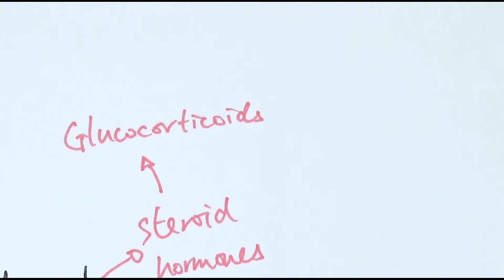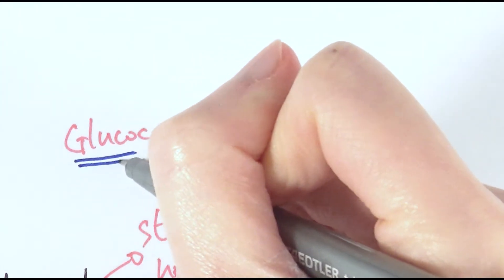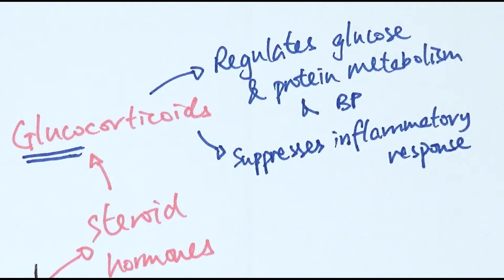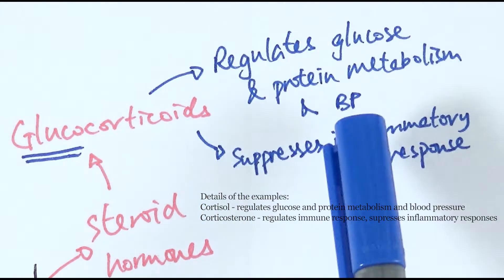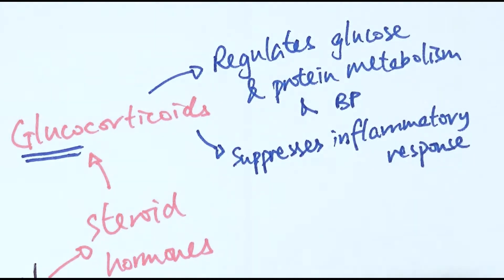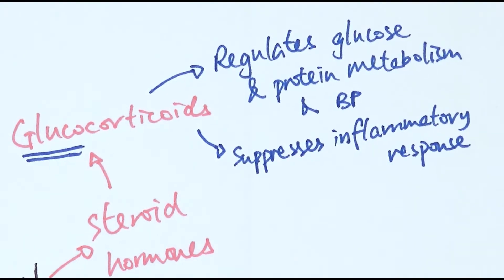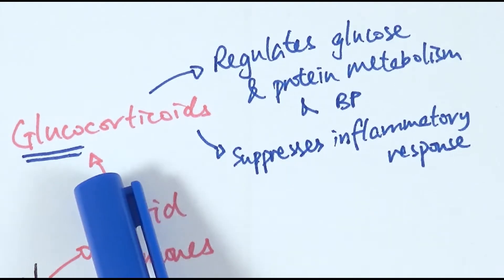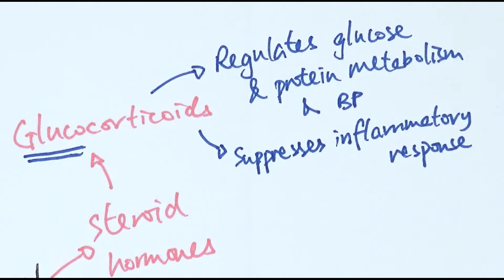The first type is called glucocorticoids. One way to remember is that it starts with the prefix 'gluco', so it has something to do with glucose. They generally regulate blood pressure and also glucose and protein metabolism. Other types of glucocorticoids can also suppress inflammatory responses. That's why sometimes if you are having a more serious inflammation, your GP might prescribe steroids, which perform some of the functions of glucocorticoids in suppressing those responses.